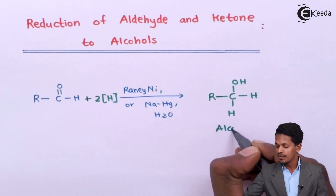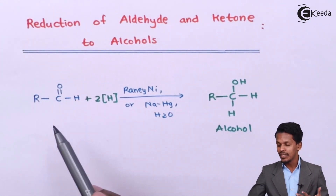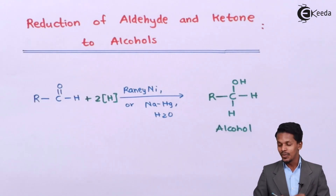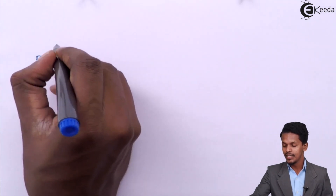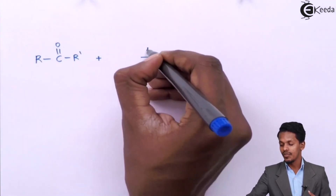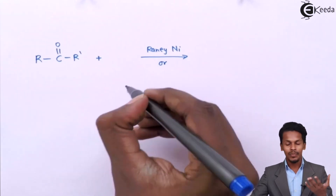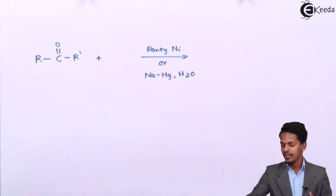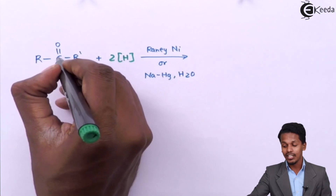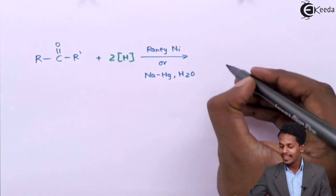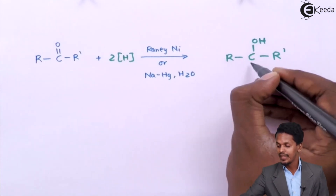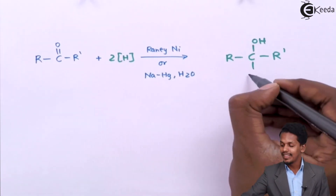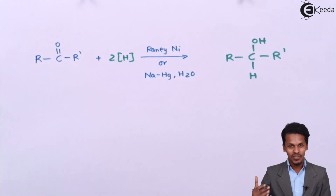The alcohol produced here is because of the reduction of the aldehyde, and in this case we can understand that the formation of a primary alcohol takes place. Now for the reduction of a ketone — taking the ketone R-C(=O)-R' and reacting it in the presence of Raney nickel or sodium amalgam with water — the nascent hydrogen attaches to the C=O, giving the product R-CH(OH)-R', which is a secondary alcohol.